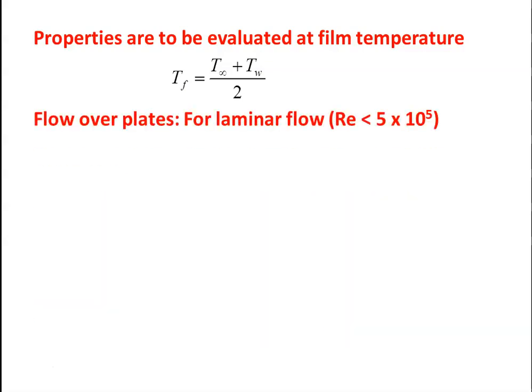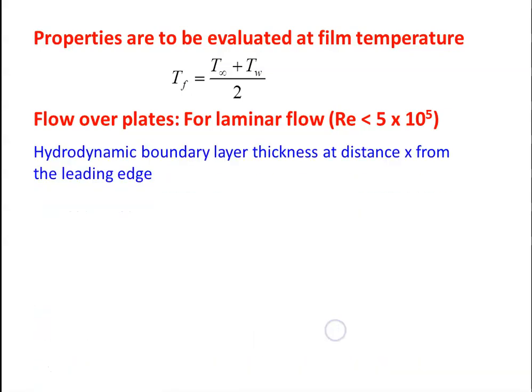First we take flow over a flat plate. We will discuss three basic geometries: flat plate, flow over a cylinder, and flow over a sphere. For the flat plate, laminar flow requires Reynolds number less than 5×10⁵. The hydrodynamic boundary layer thickness at distance x from the leading edge: δ_Hx / x = 5 / Re^0.5.